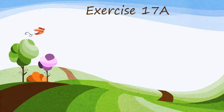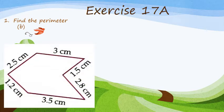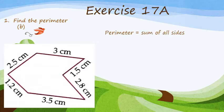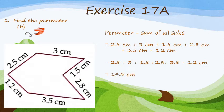After revising what we mean by Perimeter and how to find the perimeter of a square and rectangle, let's come to the revision of exercise 17a. Find the Perimeter — here you can see there is a closed figure having six sides and the length of each side is given in the figure. Perimeter is equal to the sum of all the sides: 2.5 cm plus 3 cm plus 1.5 cm plus 2.8 cm plus 3.5 cm plus 1.2 cm, which is equal to 14.5 cm. This is the perimeter of the figure.